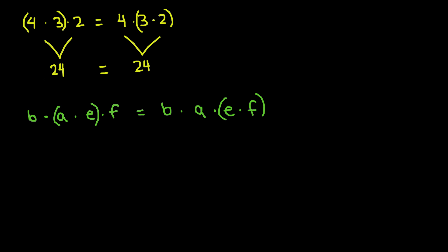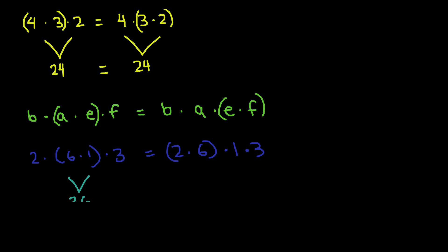I'll still get the same answer. Using numbers: 2 times (6 times 1) times 3 is equal to (2 times 6) times 1 times 3. Doing the multiplication: 6 times 1 is 6, times 2 is 12, times 3 is 36. And 2 times 6 is 12, times 1 is 12, times 3 is 36. Our answer is correct.